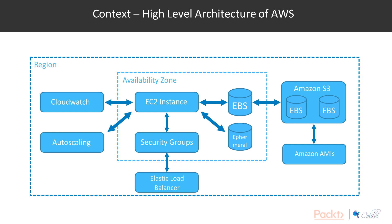Amazon S3 actually spans multiple availability zones within a given region, and it can be used to back up your EBS volumes. When you launch an EC2 instance you choose an EBS or ephemeral storage volume. People are phasing out ephemeral storage in favour of EBS because it can be used across multiple EC2 instances. You select an Amazon Machine Image to boot from, and you can snapshot your EBS volume and copy it back to Amazon S3 — so if an AZ fails, you still have a snapshot of your boot volume stored in S3 in another AZ.